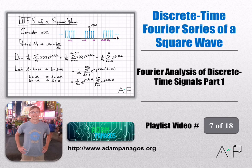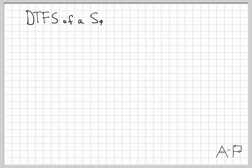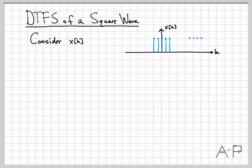All right, one more final example of the discrete time Fourier series. This time we're going to be taking a look at a periodic square wave. So here is the x of k that we'll be working with here.